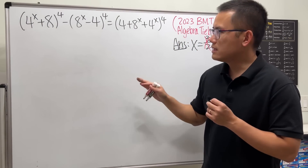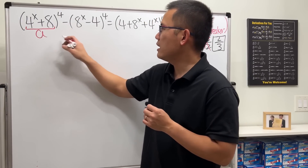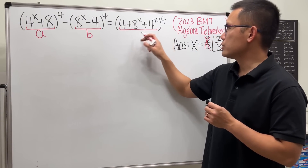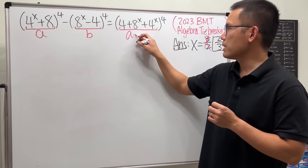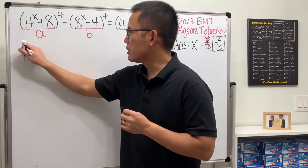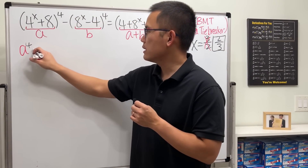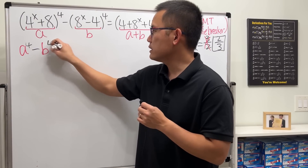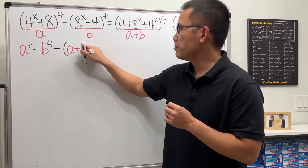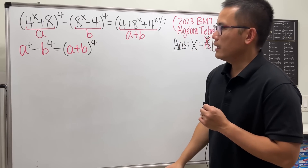To make this easier, let's call this expression a, and call this one b. Then this right here will just be a plus b. So this equation, working with a and b, becomes a to the fourth minus b to the fourth equals a plus b to the fourth.